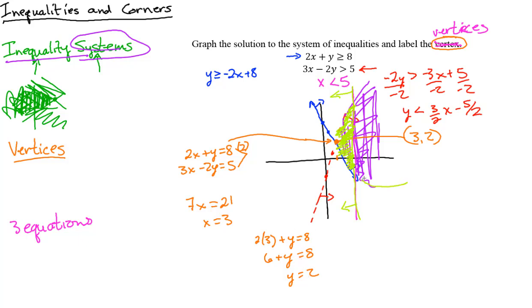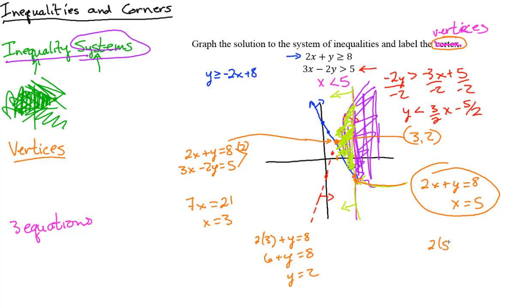To find the new corner on the right, we intersect the blue line 2x + y = 8 and the green line x = 5. Since x = 5, substitute: 2(5) + y = 8, so 10 + y = 8, y = -2. That corner point is (5, -2).